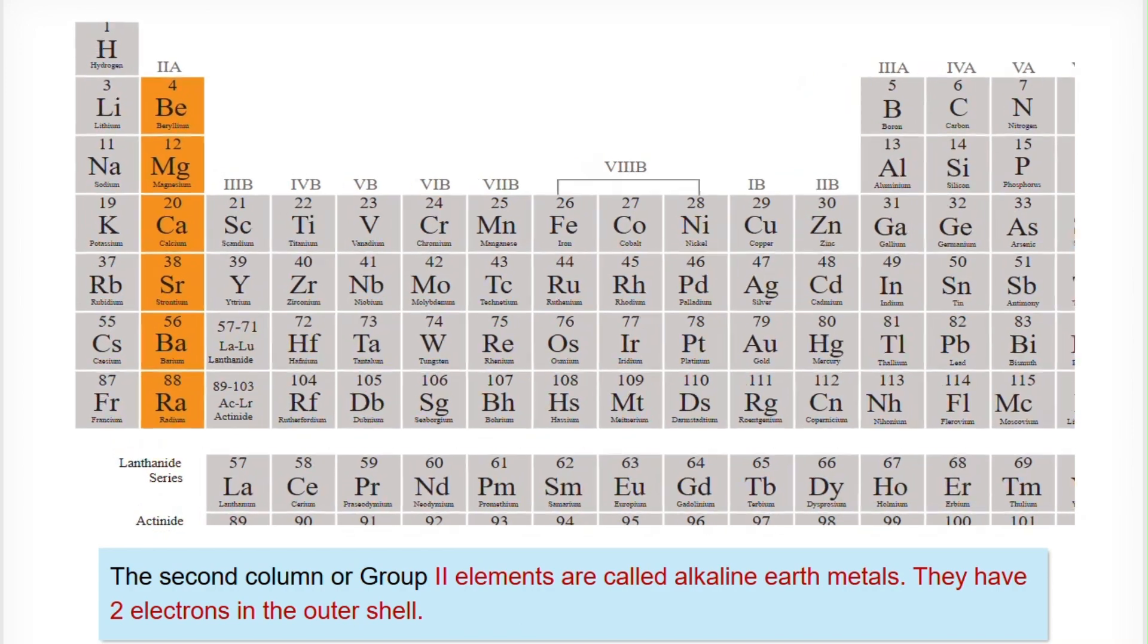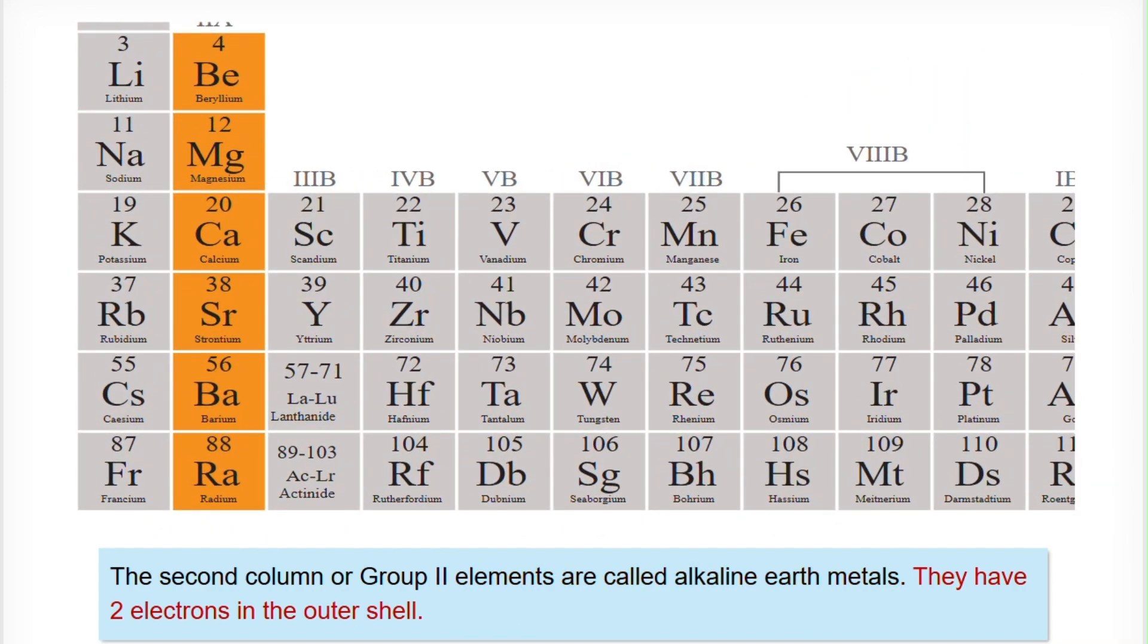The second column of group 2 elements are called alkaline earth metals. They have 2 electrons in the outer shell.